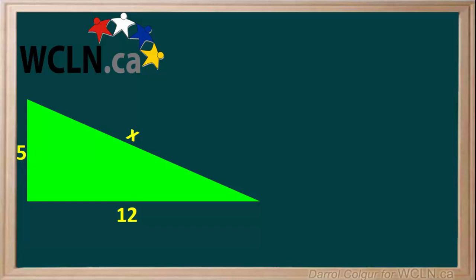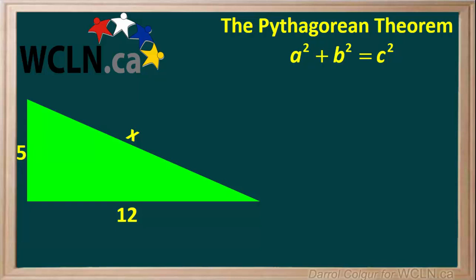We can use the Pythagorean Theorem to calculate the length of the hypotenuse. The Pythagorean Theorem is a squared plus b squared is equal to c squared.